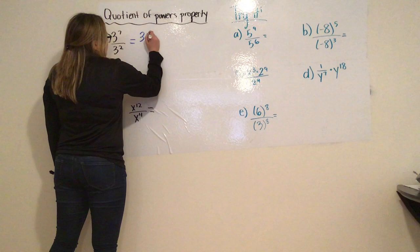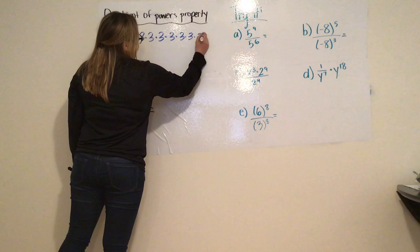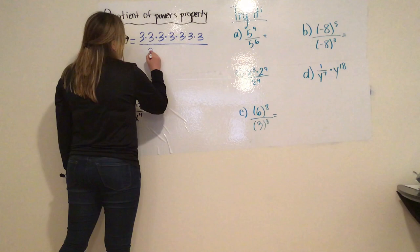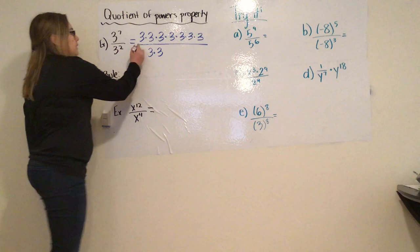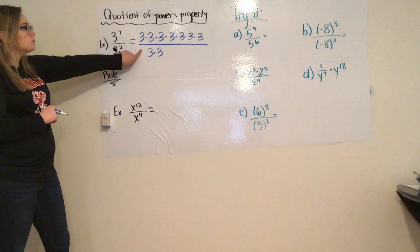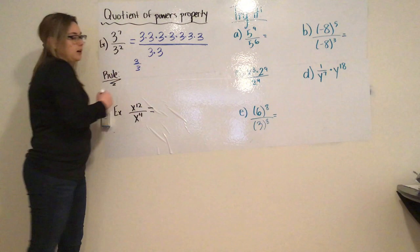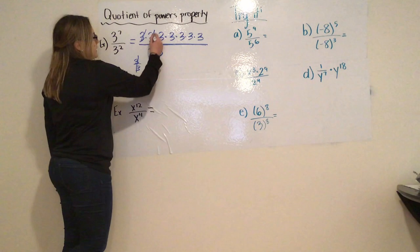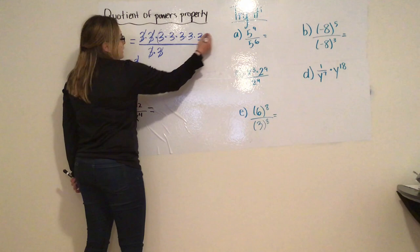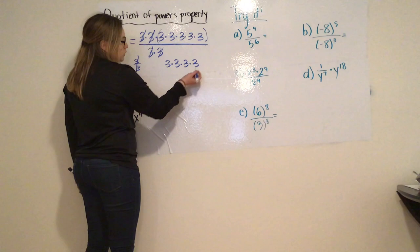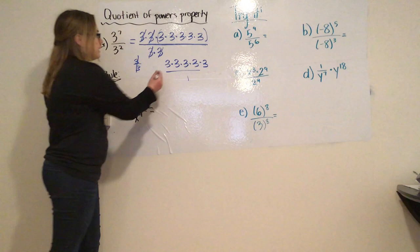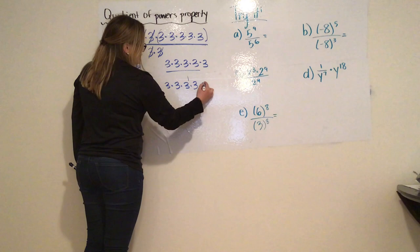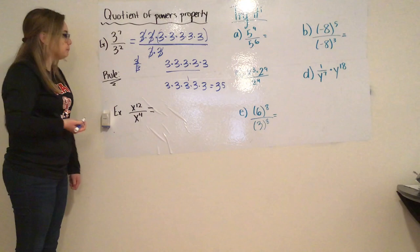So I'm going to use the expanded form. I'm going to do three times itself seven times, and it's all being divided by three times three. Now, a fraction is also represented by division. So three over three becomes one whole, and a set of three from the top and the bottom become one. Three over three becomes one, so now I'm left with just five threes all over one.